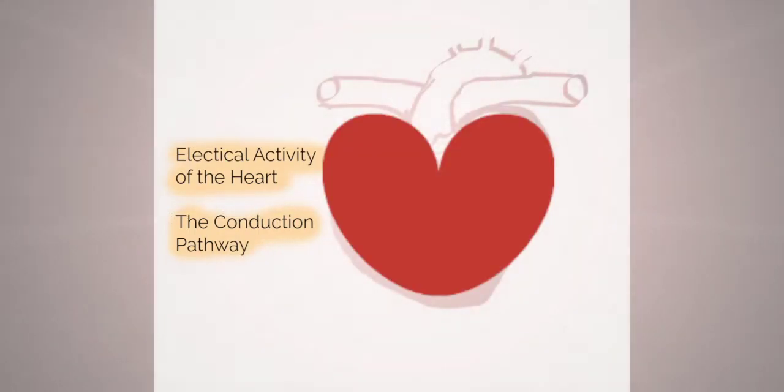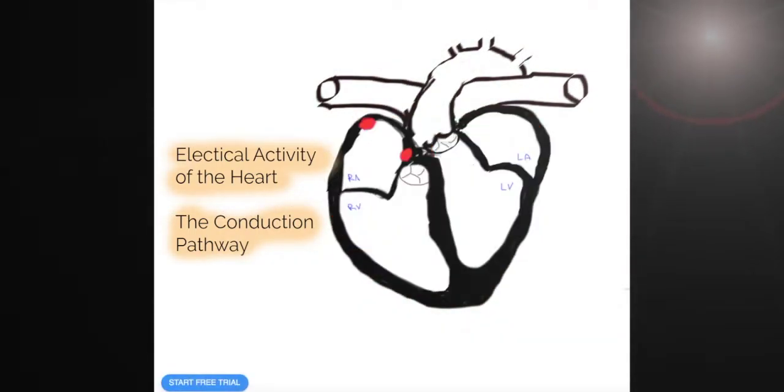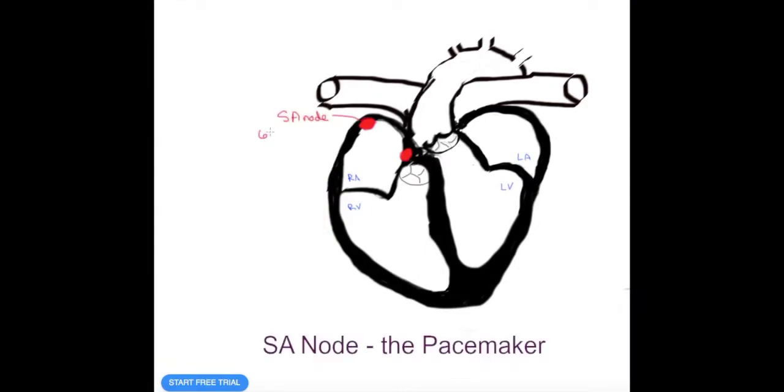In this tutorial we are looking at the electrical activity of the heart known as the conduction pathway. So it begins with the sinoatrial node, the SA node known as the pacemaker.